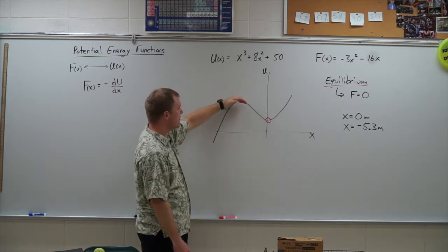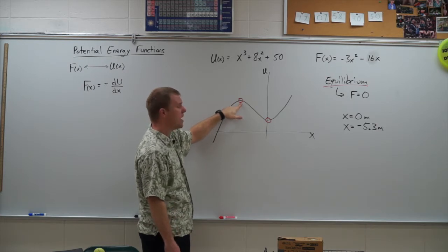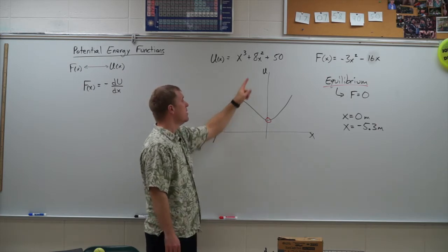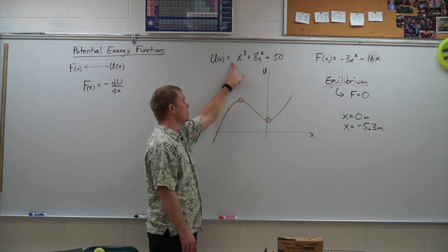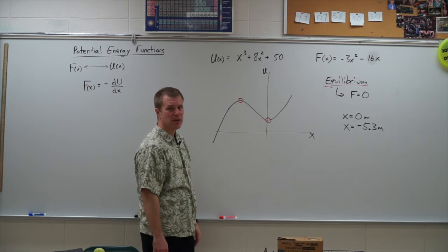Concave down, so the second derivative at this point is negative, tells me that I have an unstable equilibrium. Concave up, the second derivative at this point is positive, so I have a stable equilibrium.